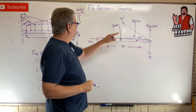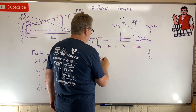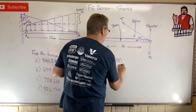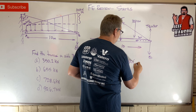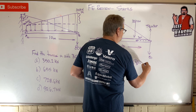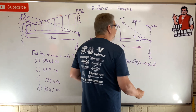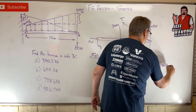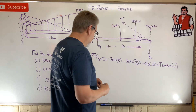We're looking for the tension, so we write the moment equation about A. Minus 300 times 5 — because it's in the middle — minus 350 times two-thirds of 10, minus 80 times 10, and then the tension rotates me the other way, so plus T sine 30 times 10.